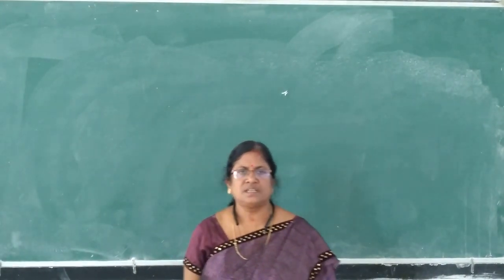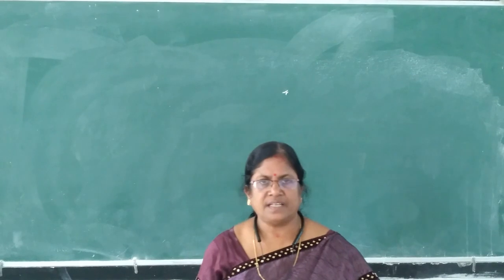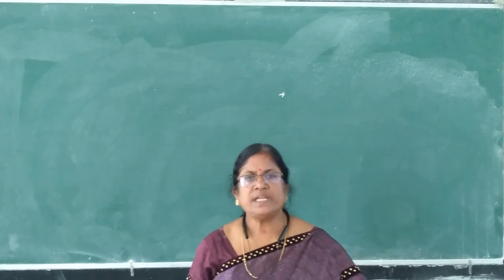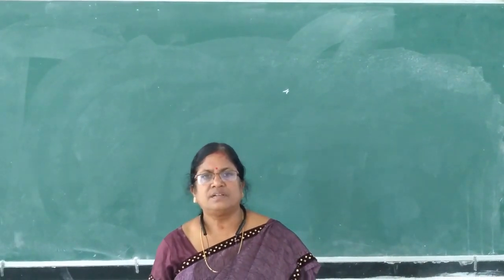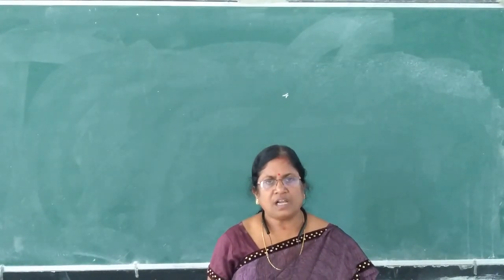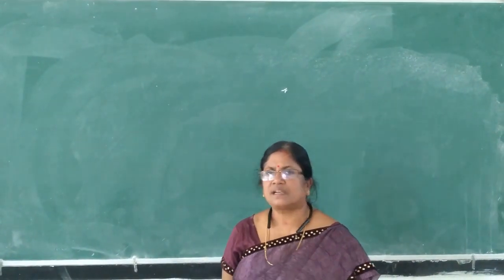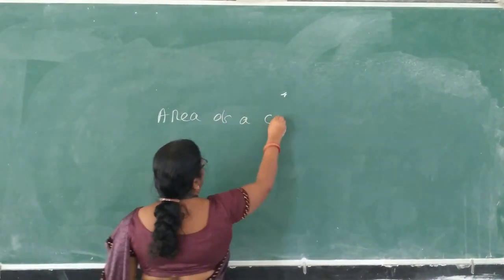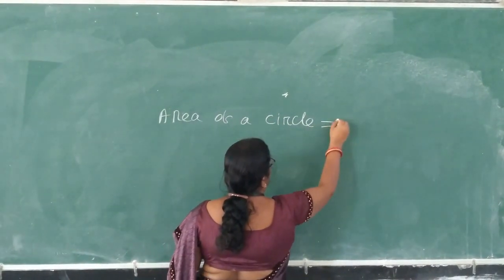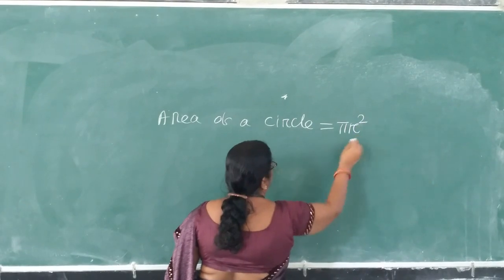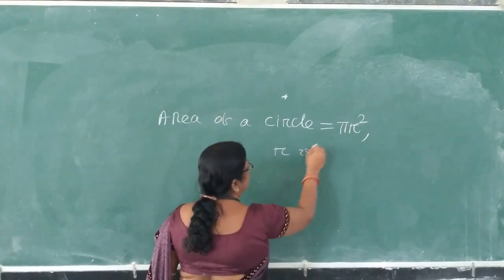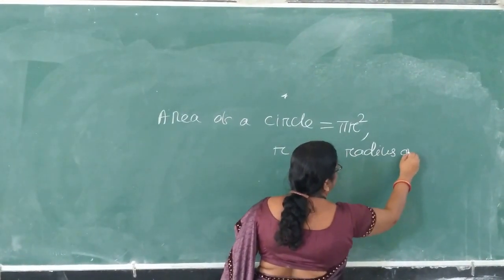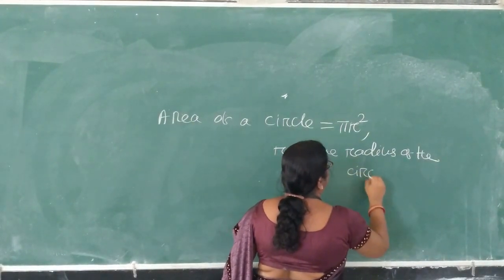Good morning students. Myself, Gita Shri Karai, TGT Maths, Jen Higajan. Today, I am going to teach you the chapter Area Related to Circles. All of you know that area of the circle is pi r square, where R is the radius of the circle.